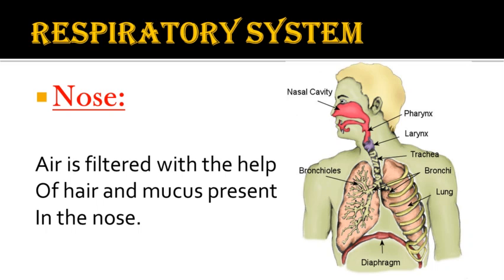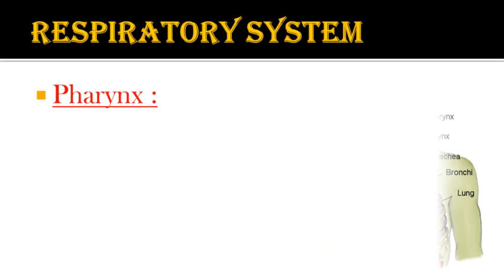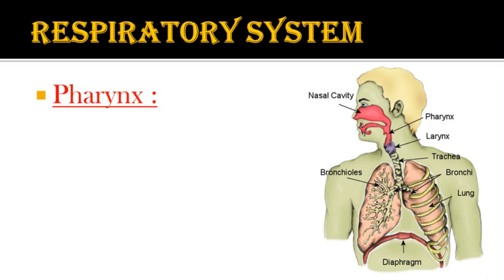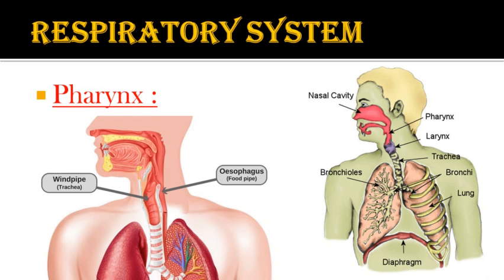The next part is the pharynx, which is just below the nasal cavity, as you can see in the picture. The food pipe and wind pipe both originate in the pharynx. The wind pipe is also called the trachea, and the food pipe is called the esophagus. These are two different pipes. The wind pipe is present in front of the food pipe.